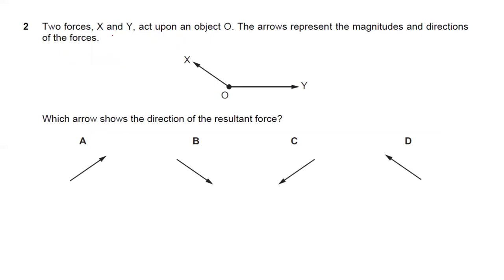Question two: two forces X and Y act upon an object O. The arrows represent the magnitudes and directions of the forces. Which arrow shows the direction of the resultant force? We use the parallelogram law — make X parallel and the resultant vector is formed. So R is the resultant of X and Y, and the nearest arrow is A.